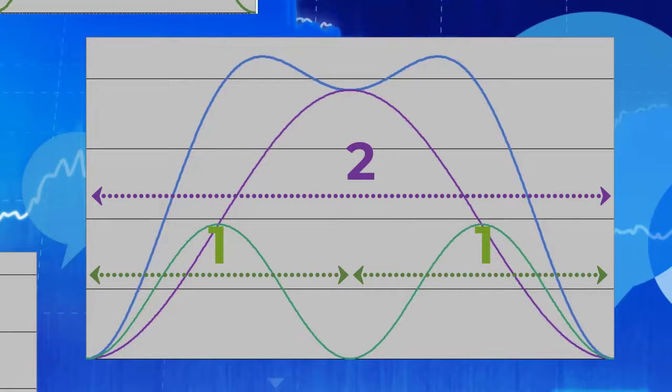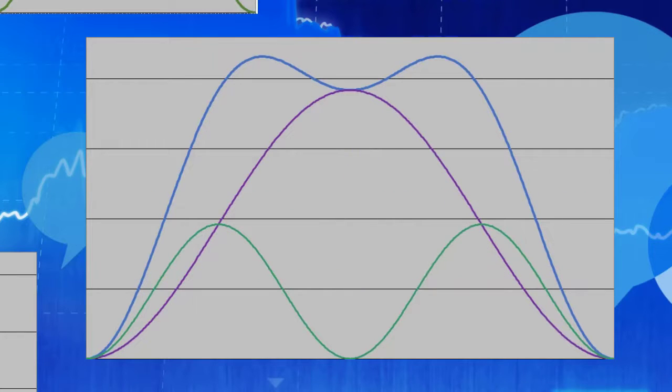And they obey the principle of synchronicity because their troughs are synchronized where possible. Notice the where possible because of the fact that the green cycle has a trough that cannot possibly be synchronized with the trough of the purple cycle because of the fact that the wavelength of the purple cycle is twice as long as the wavelength of the green cycle.